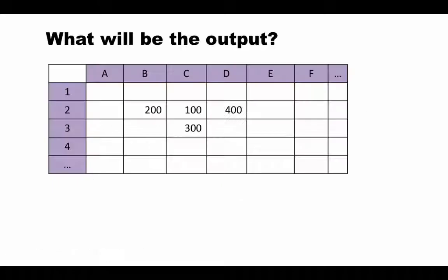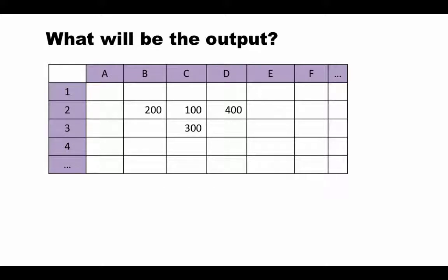Some food for your brain. So suppose you're given this spreadsheet and suppose you write this formula equals max 150, 20, b2. It doesn't really matter into which cell you put this. So if you put this into a particular cell, what will that cell display? So take a look at it, think about it, determine your answer and then continue the video.